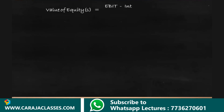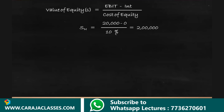The value of equity (S) is calculated as earnings before interest minus interest, divided by cost of equity. For firm N: 20,000 divided by 10% equals 2 lakhs. For firm M: EBIT minus interest is 20,000 minus 7,000 (1 lakh × 7%), giving 13,000, divided by the cost of equity of 11.5%, which equals 1,13,043.